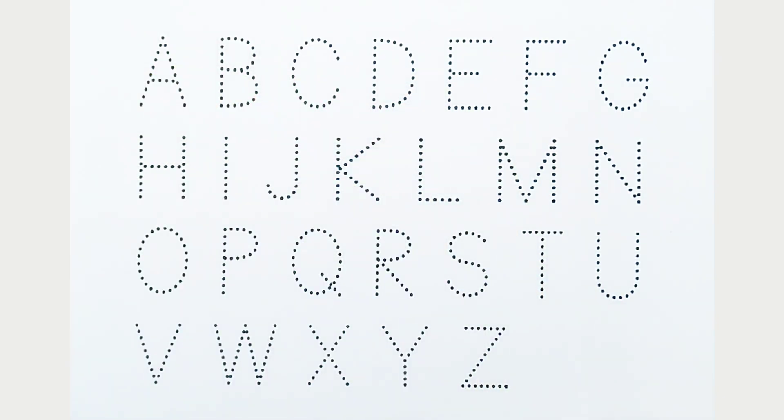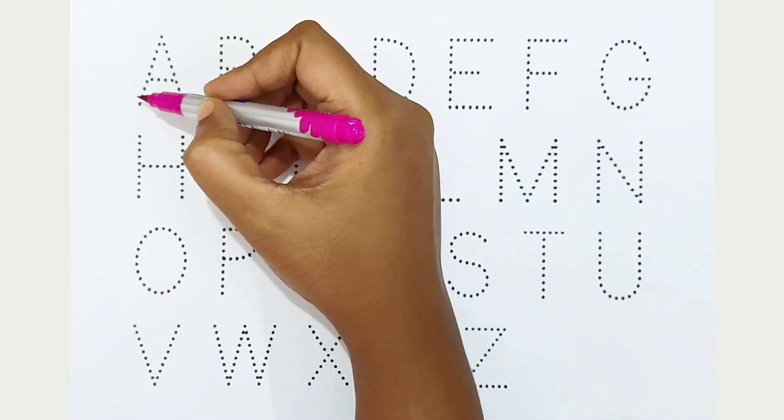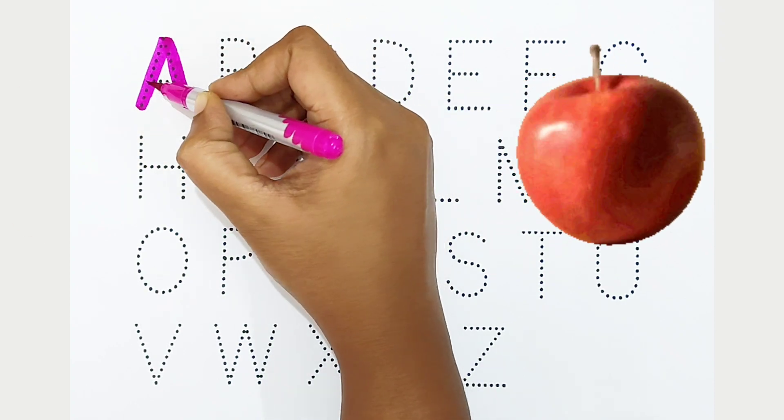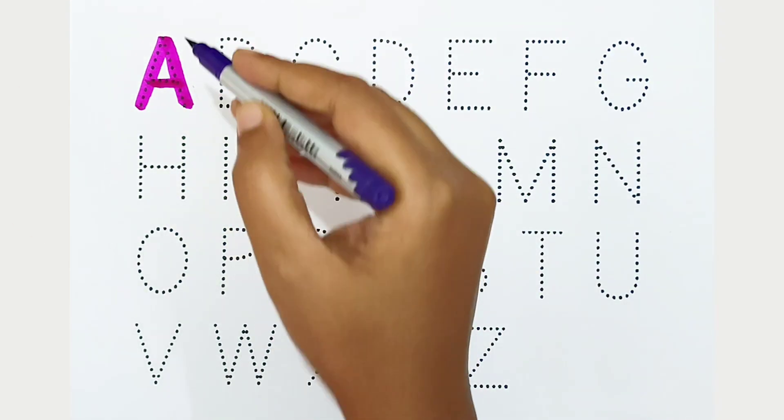we can learn the alphabets from A to Z. Let's begin! A: dark pink color. A is for apple. B: